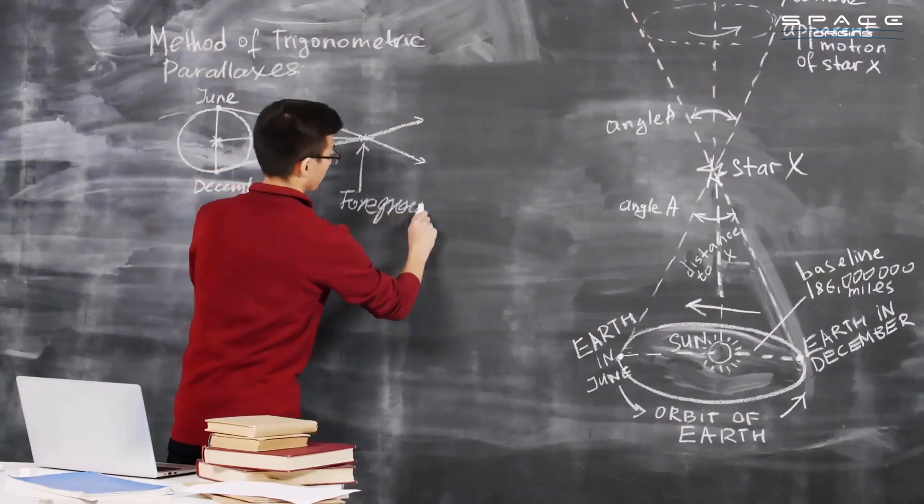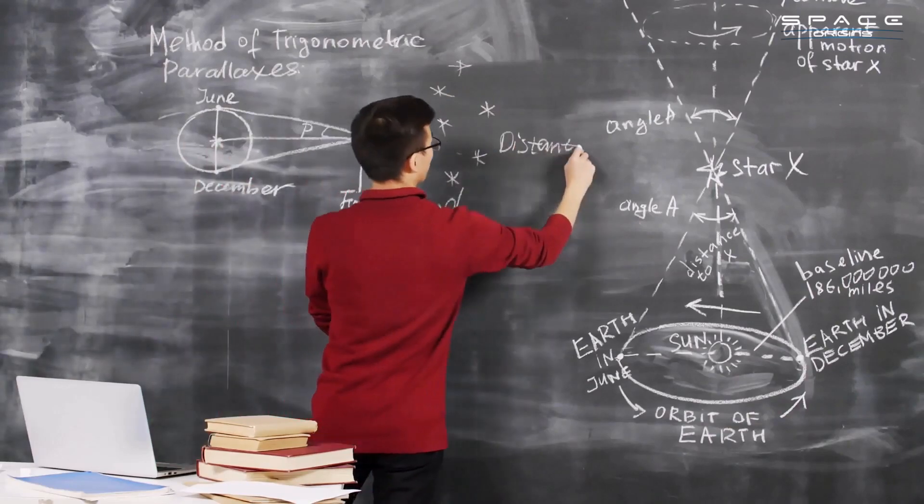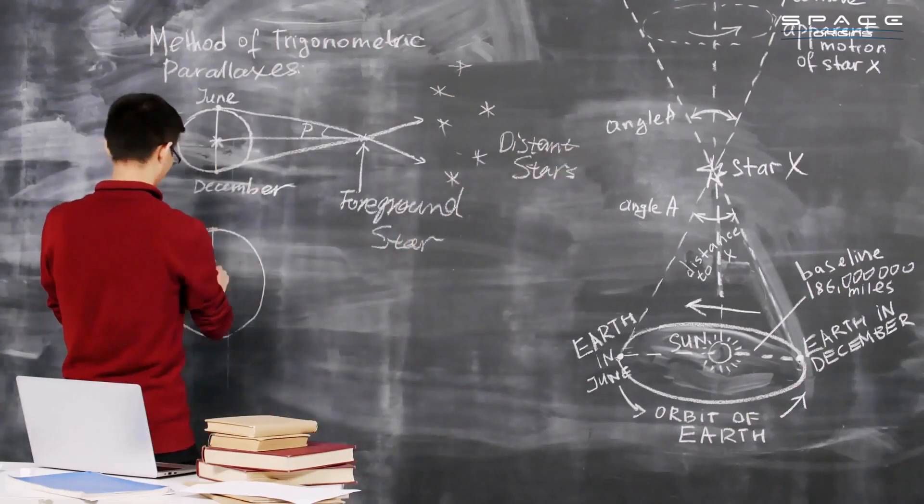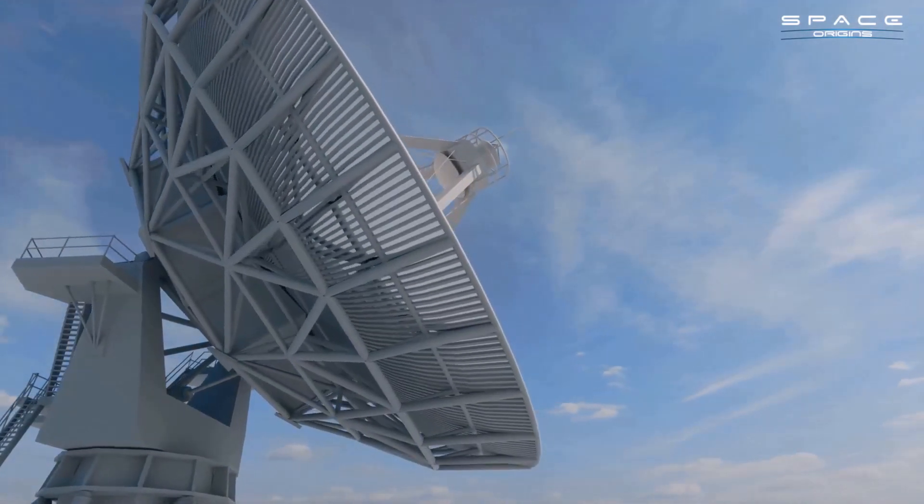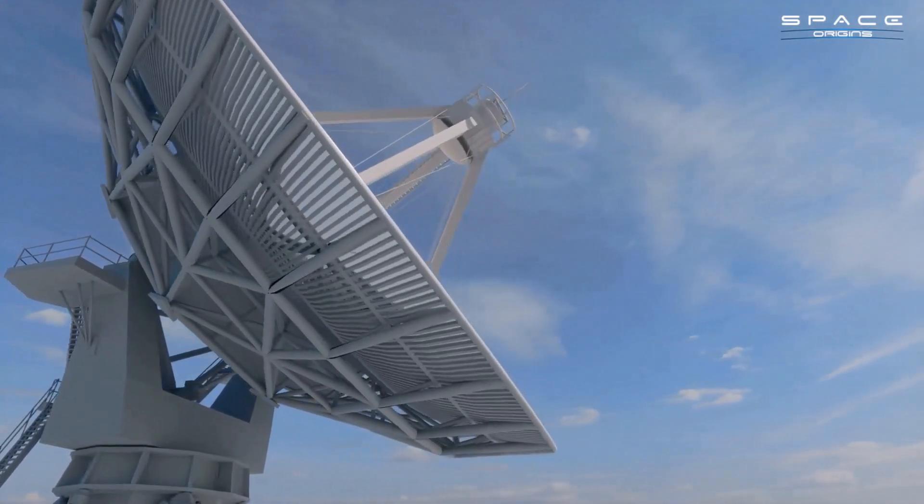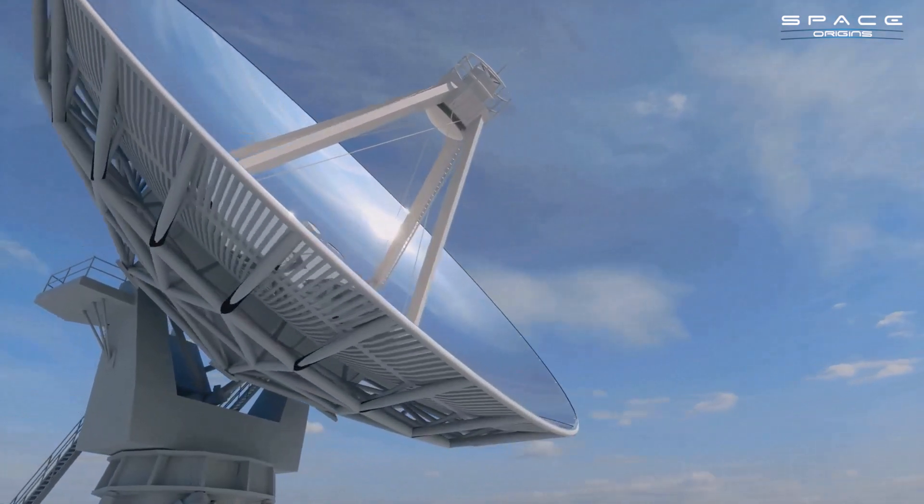The science behind the sun's glare has also been a key part of our discussion. We've learned how the intense light of our star can obstruct our vision, making the detection of asteroids a complex task. However, this challenge has not deterred the scientific community.